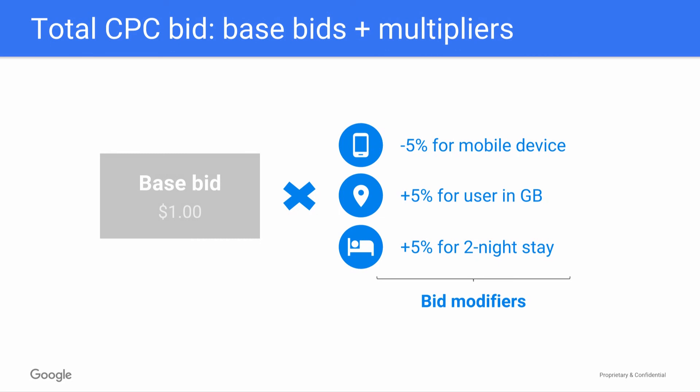Your base bids can get multiplied by any bid multipliers you choose to set. These multipliers allow you to custom tailor your bids to any conversion rate trends you see around factors like the user's device, country, or length of stay.